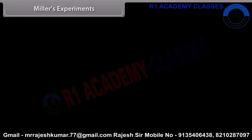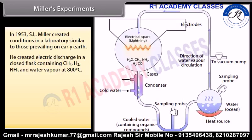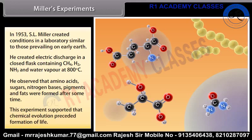Miller's Experiment. In 1953, S.L. Miller created conditions in a laboratory similar to those prevailing on early Earth. He created electric discharge in a closed flask containing CH4, H2, NH3 and water vapor at 800 degrees Celsius. He observed that amino acids, sugars, nitrogen bases, pigments and fats were formed after some time. This experiment supported the idea that chemical evolution preceded the formation of life.